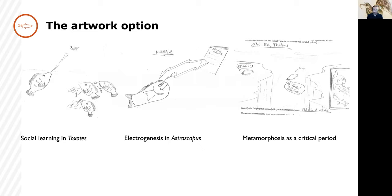From left to right, we have visual explanations of how archerfish learn socially from each other, how the stargazer has modified its eye musculature into an electric weapon, and how metamorphosis represents the second critical period in the life history of marine fish larvae.